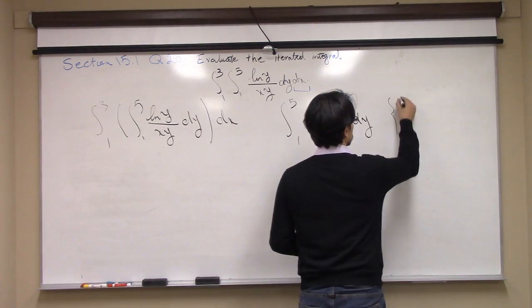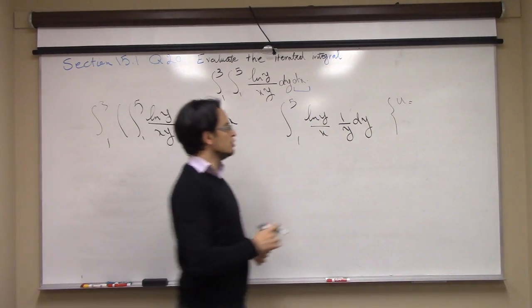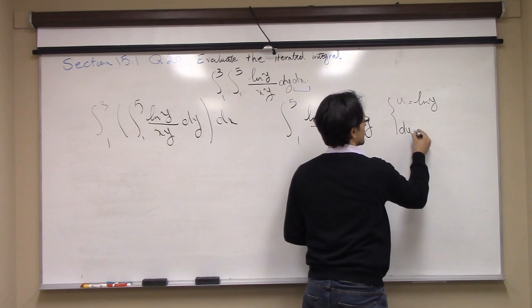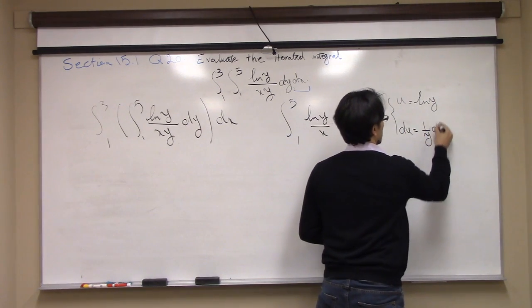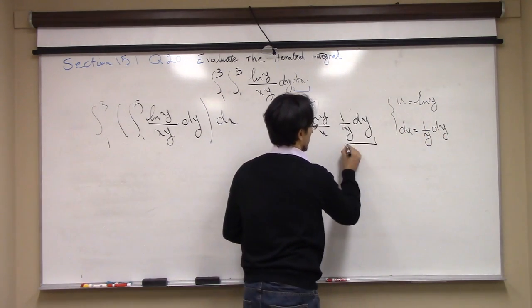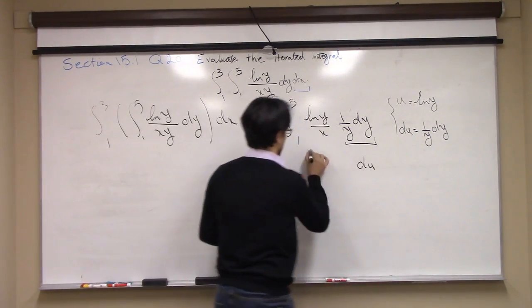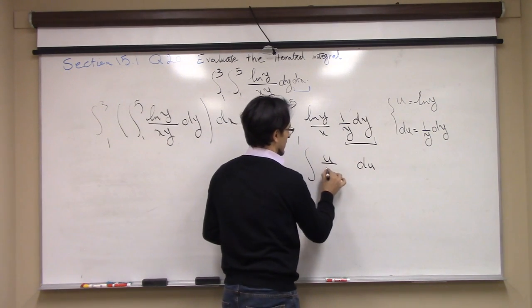I can do this by substitution. Set u to be ln y, then du is 1 over y dy. I have 1 over y dy there, so this is du, and this becomes u over x.